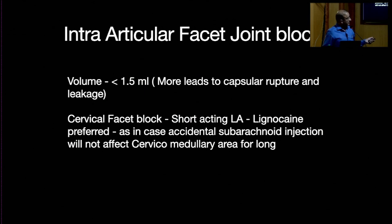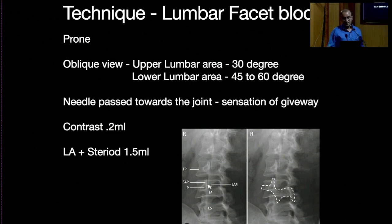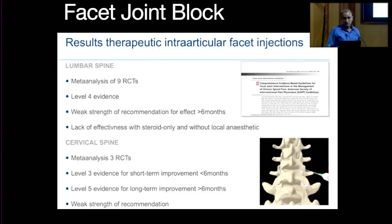For intraarticular facet joint block, inject less than 1.5 ml to avoid capsular rupture or leakage. For cervical facet, use a short-acting local anesthetic; for lumbar, a long-acting one is preferred. You identify the facet line and push the needle straight in, then inject the dye to confirm placement.